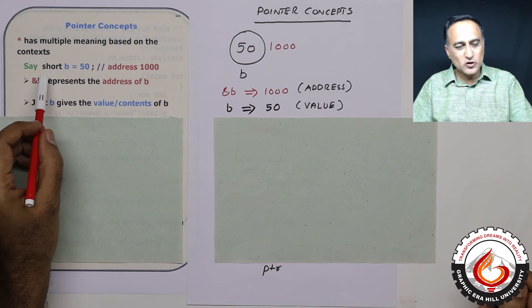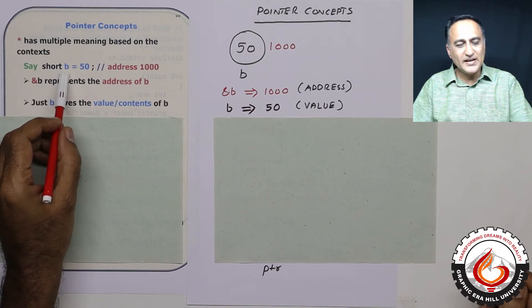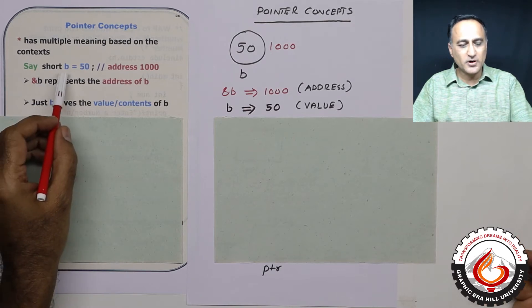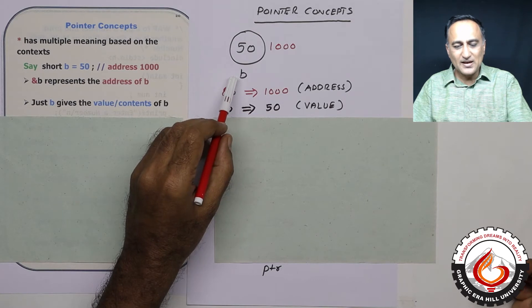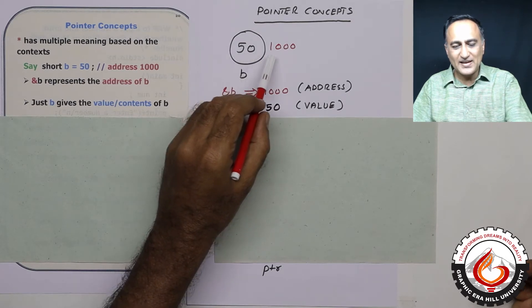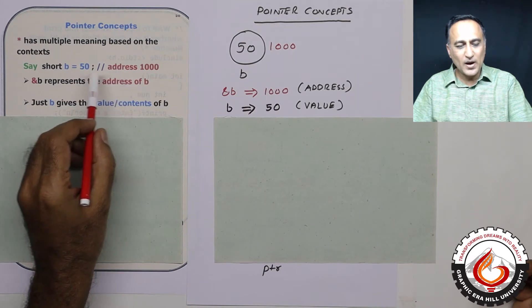Say I declare a short integer b as 50. I don't need to use the word int with b because I can just use the keyword short and b with the initial value 50. So let's say b has an initial value 50 and exists at address 1000.